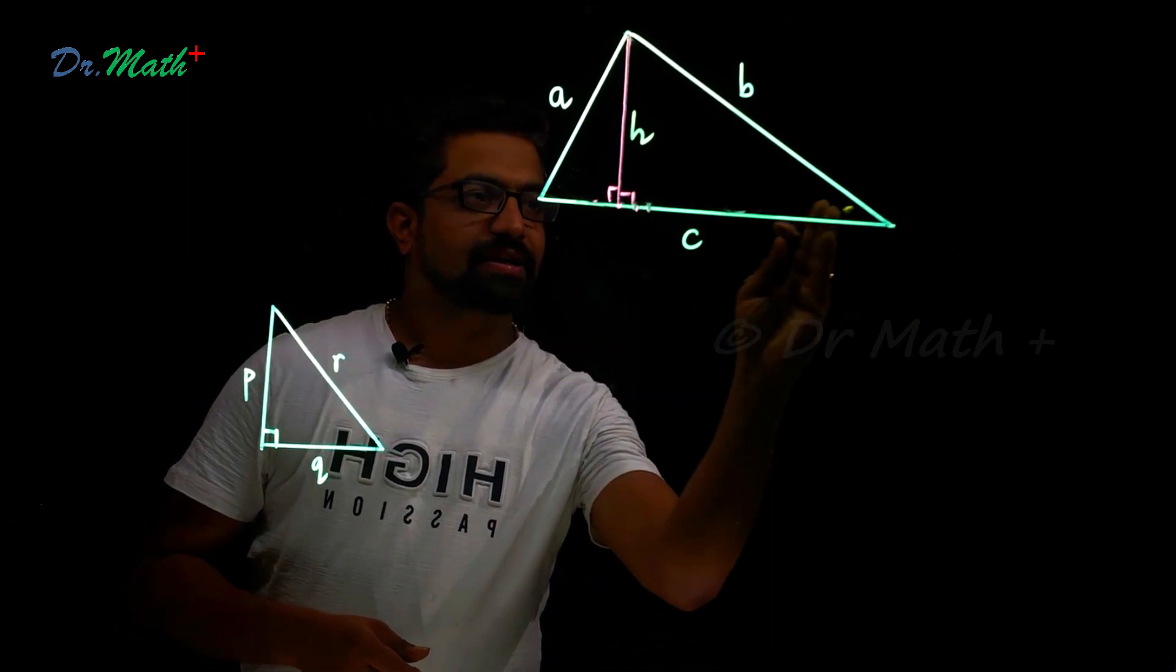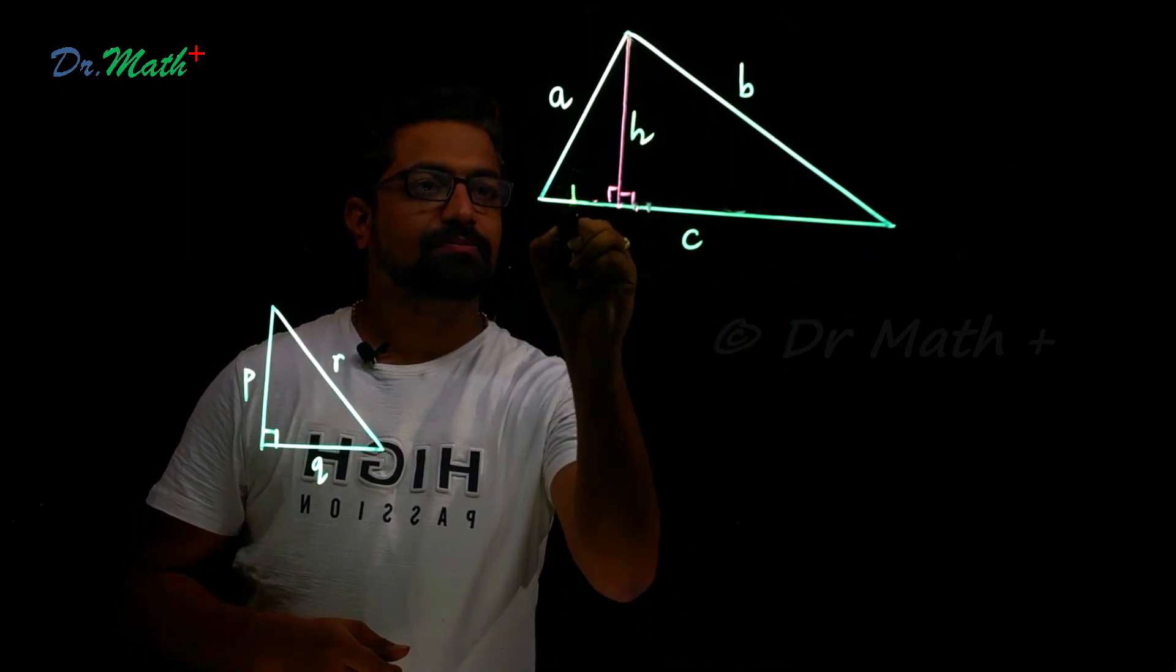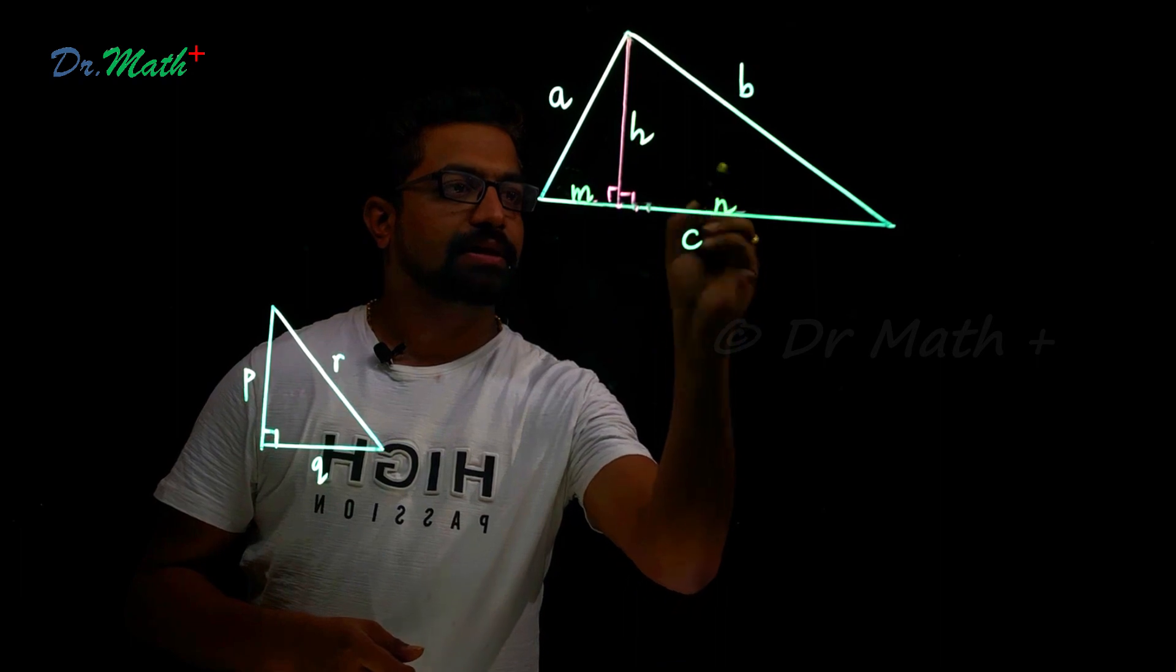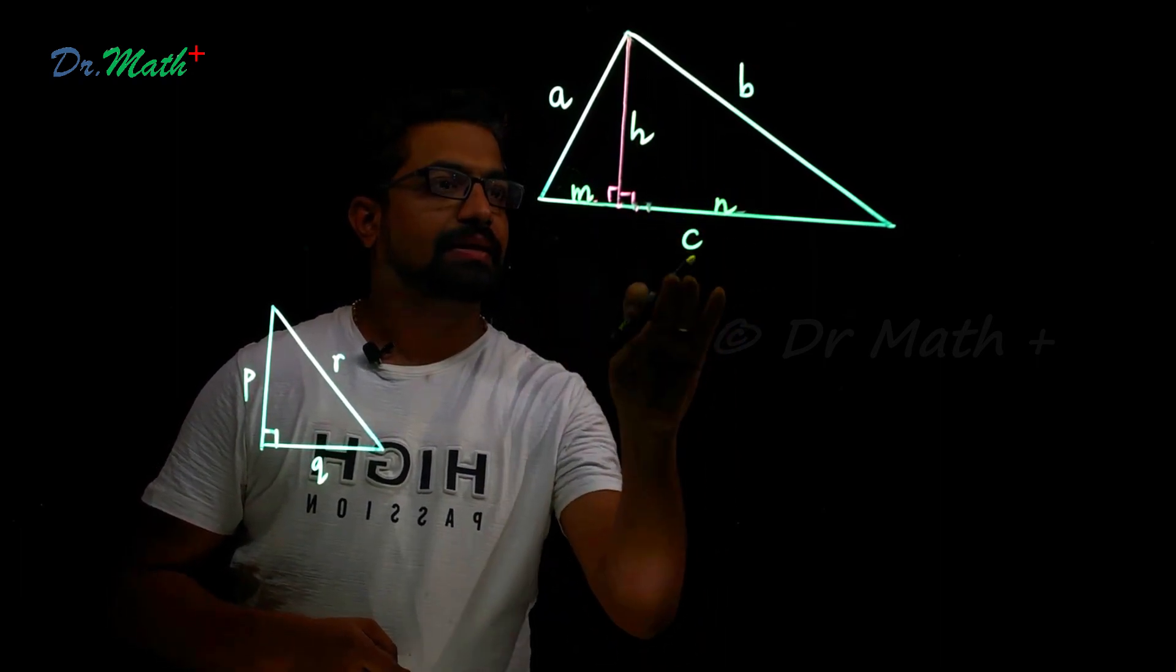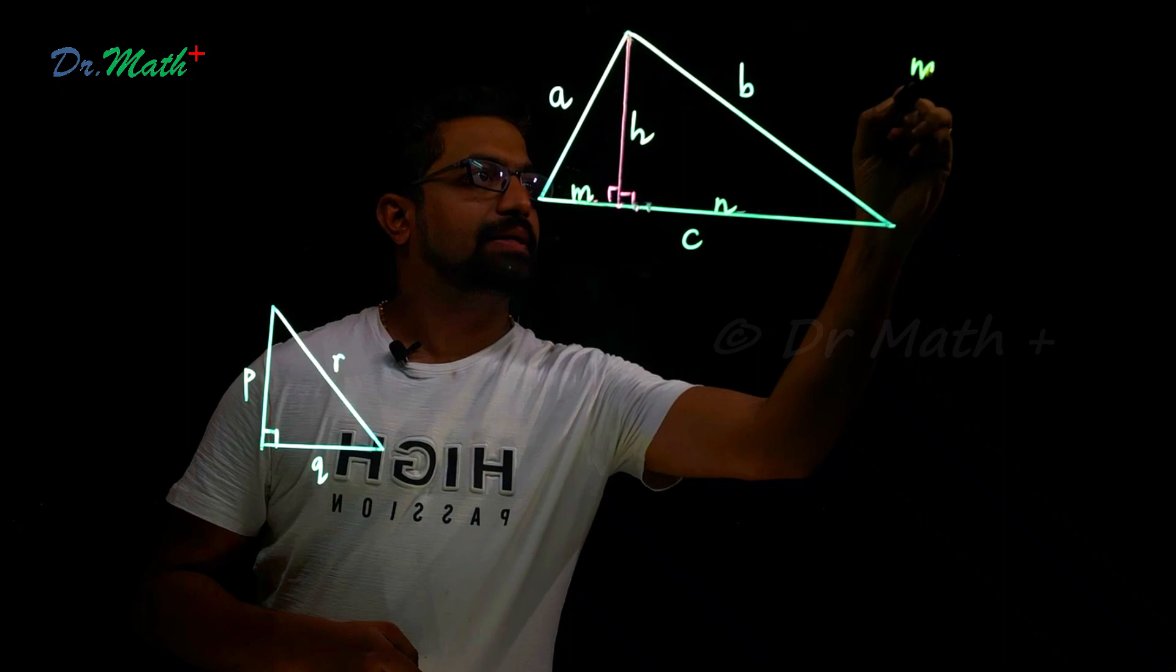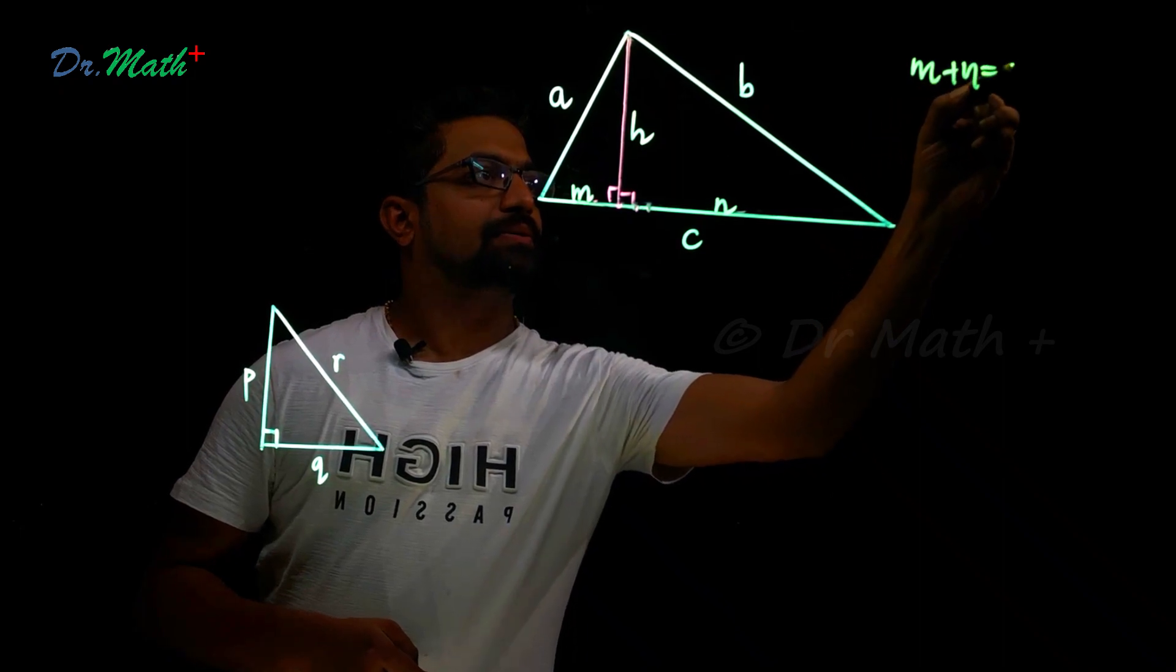So now c gets divided into two parts. Let me name the first part as m and the second part is n, which means m plus n equals c. So let me write it here: m plus n equals c.